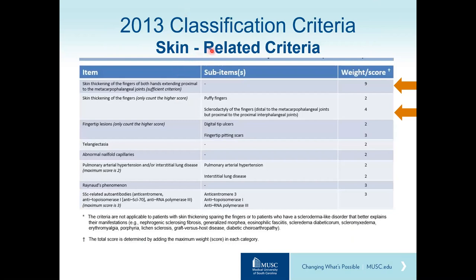Skin-related criteria form an important part of the 2013 classification criteria. Skin thickening proximal to the metacarpophalangeal joints is sufficient for classification of scleroderma, giving a score of 9. Some patients have skin thickening confined only to the fingers — so-called sclerodactyly — which gives four points. Since skin involvement is a very important part of the disease, let's talk about the scoring of skin thickness.